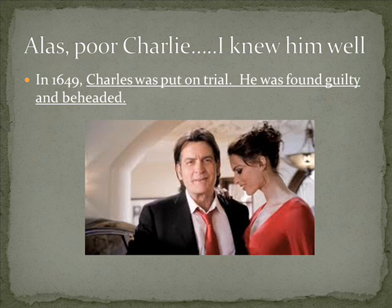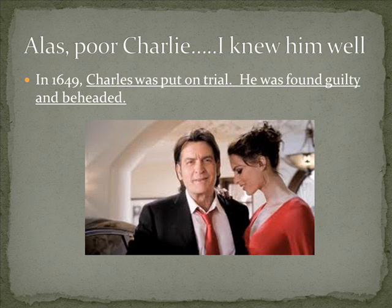Charles was put on trial in 1649, and they found him guilty. Charles had already experienced a kind of house arrest, but he decided to escape and try to start the whole thing back up. So when he was caught this time and put on trial, they found him guilty for not obeying the law and for taking advantage of the English people. He was beheaded. His head rolled. The king was dead.